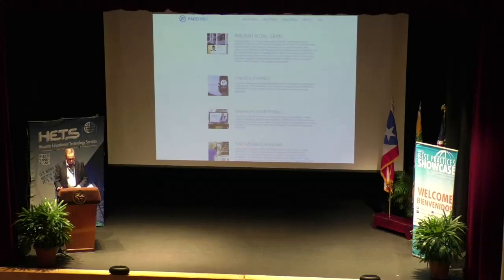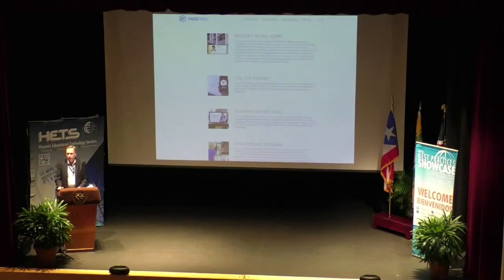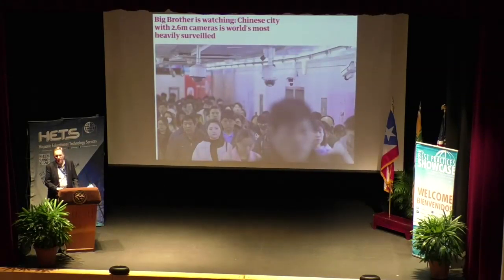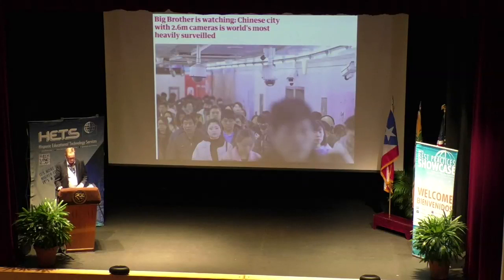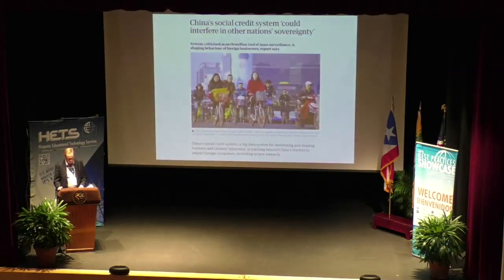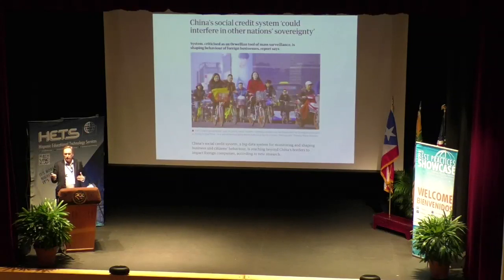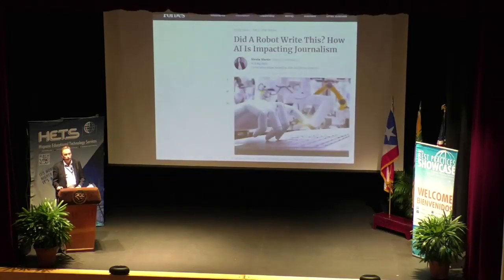The facial recognition technology is being used to prevent retail crime, unlock phones, do smarter advertising, and find missing people. Not all applications are so helpful. There's a giant surveillance state being developed in China based on facial recognition technologies, which has some people concerned. This computer vision system is tied to a social credit system that tightly monitors and rewards and penalizes citizens according to their behavior, and it could potentially spill over outside of China.